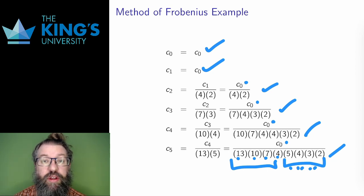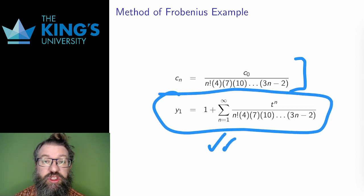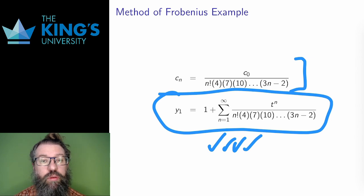With this pattern observation, this is the general form, and this form works for n equals 1 and onwards. Therefore, this is the solution I get from r equals 0. This is a nice Taylor series solution. I only get one linearly independent solution here, and that's fine. I only expected one for each root of the indicial equation.